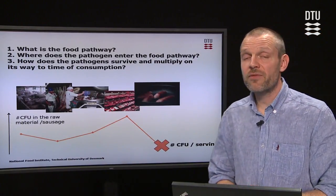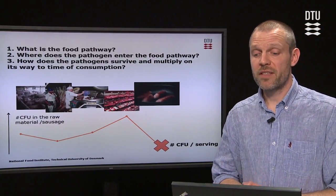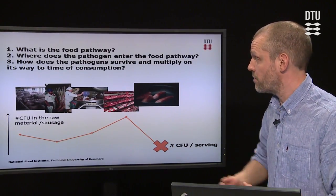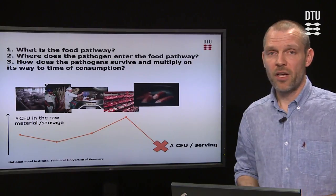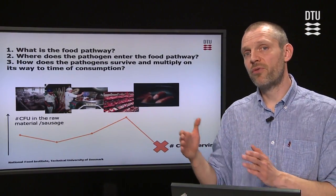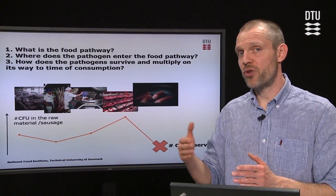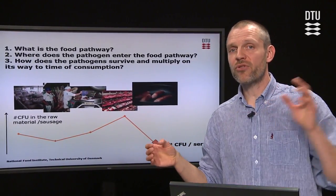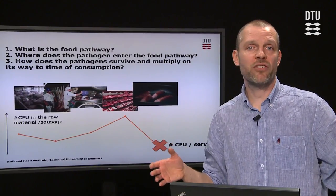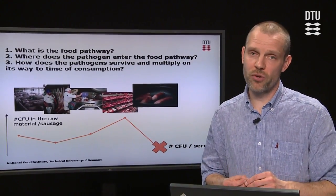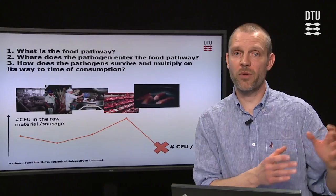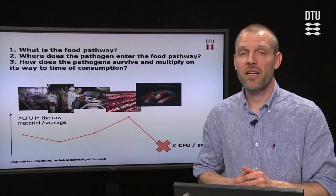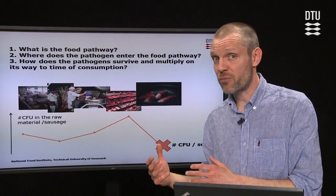You have to ask yourself some questions when you develop this exposure assessment. First of all, you have to figure out what is the food pathway. You need to describe how the food item you are working with is produced, and it always ends at the consumption. But where you start your production line depends on the question you are going to work with in a risk assessment. You can start from the very beginning or you can start in the middle of a production line, but the end is always the end product at consumption.